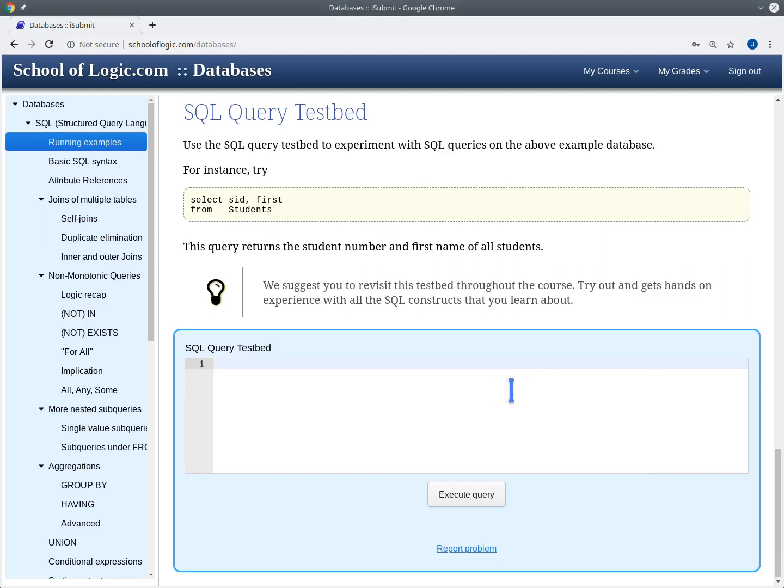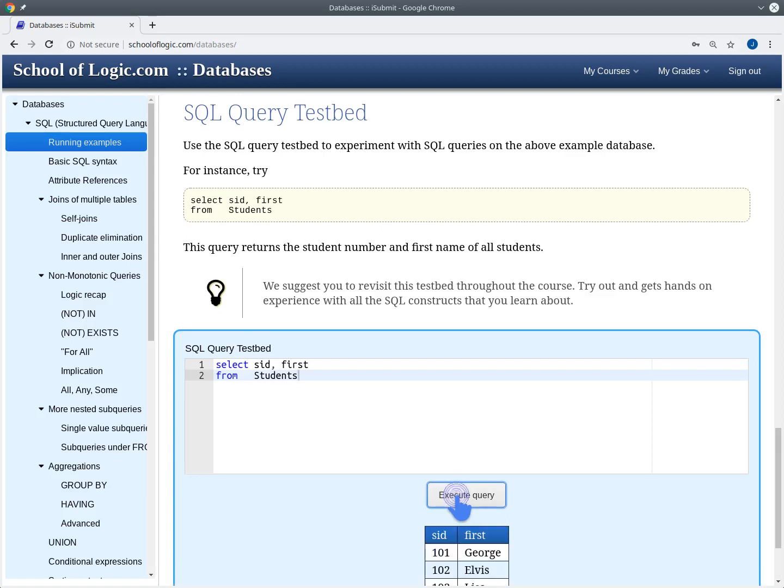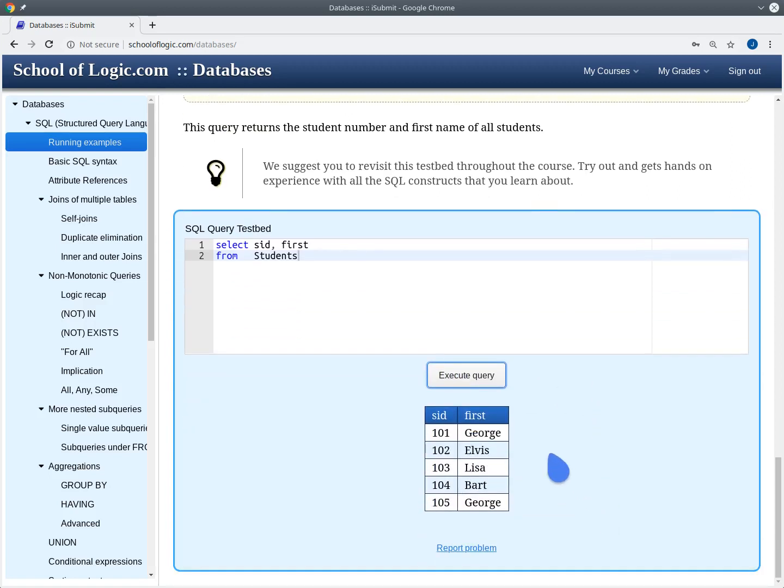So we can execute queries on this example database and immediately see the result. Let's start with this very simple query. So we select the student ID and the first name from the students table. There is no WHERE clause given, so all of the rows will be considered. Now let's execute this query. We get a table that contains all of the students IDs and the first name.